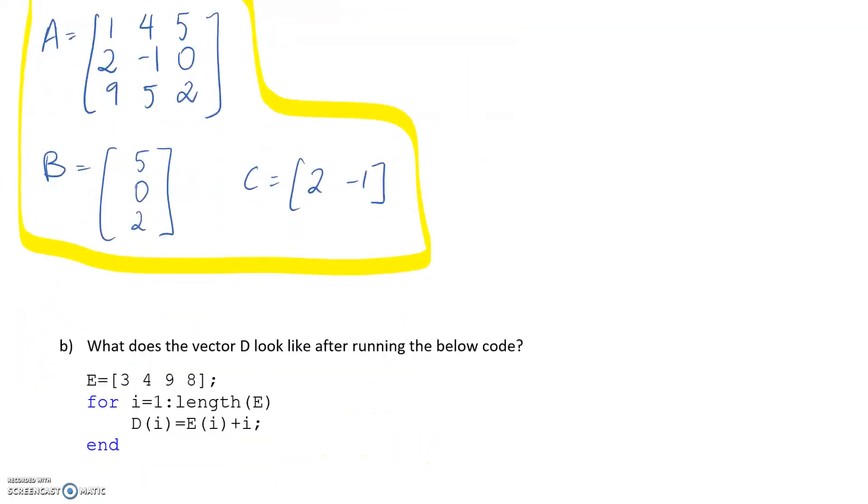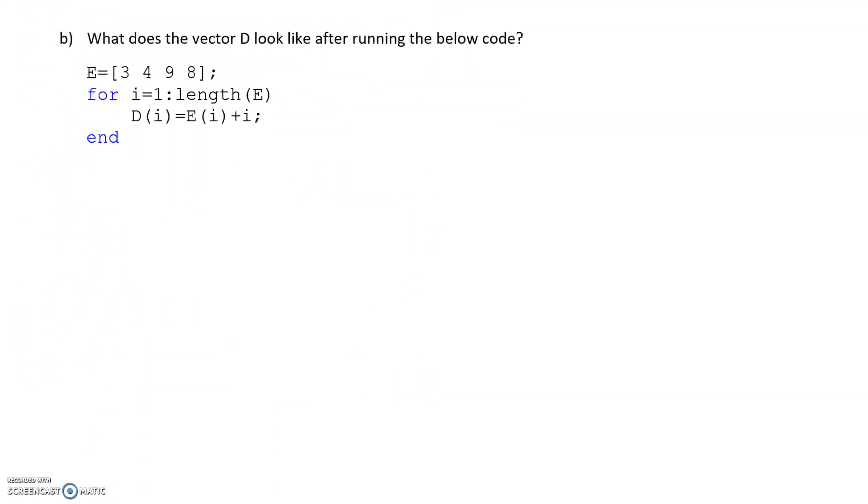Let's go down now to the next one. We're asked, what does the vector D look like after running the below code? So we can see that a matrix E is defined. It's got four elements in it, and then we're going to run through a for loop. So, i here is our count variable, we're told to start at 1, and run up until we reach the length of E. So the length of E is just going to be how many elements are appearing in here. So I would suggest that that would be just equal to 4, since we have four elements. So once we've got that worked out, we're going to go from 1 to 4.